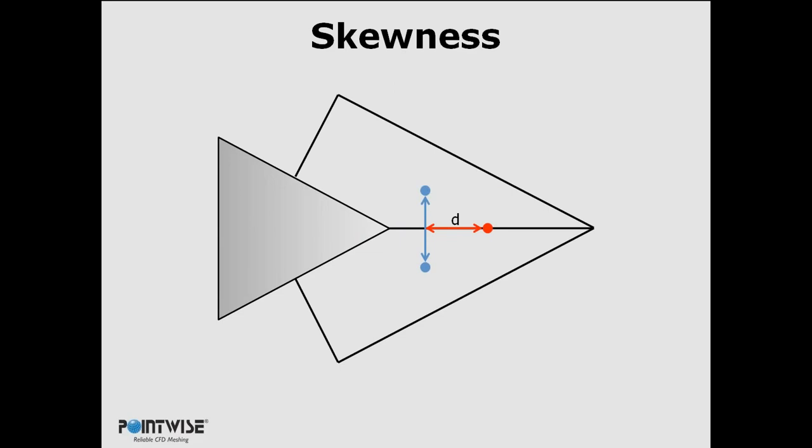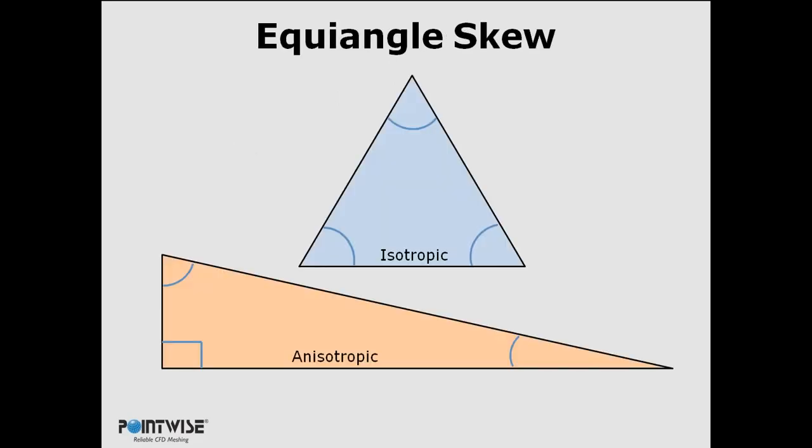Some of the metrics that you can look at in Pointwise. One of them is equi-angle skew. Equi-angle skew is essentially the deviation from an isotropic state. So we have an isotropic triangle, 60-degree internal angles, and an anisotropic triangle that has high equi-angle skew because of its deviation from that isotropic state.